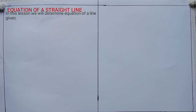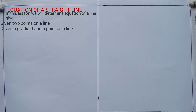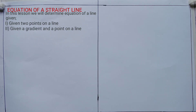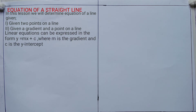There are two scenarios in which you can find the equations of a straight line. But before that, it is important to note that linear equations can be expressed in the form y = mx + c, where m is the gradient and c is the y-intercept.